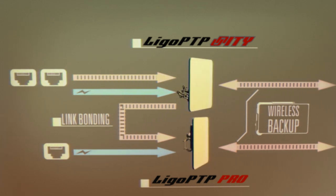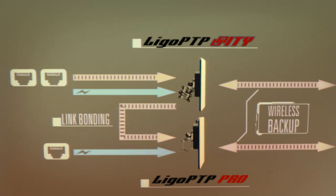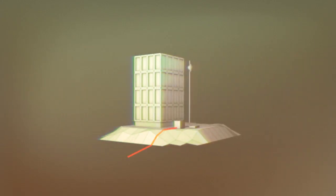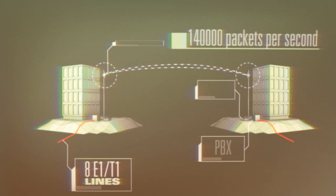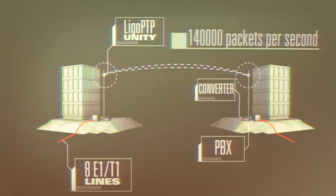Maximum throughput is achieved when the traffic source is coming from a single MAC address. With a 140,000 packets per second data rate, Unity is ideal not only for IP but also for TDM networks, allowing up to 8 E1 T1 lines on a single Lego PTP Unity link.